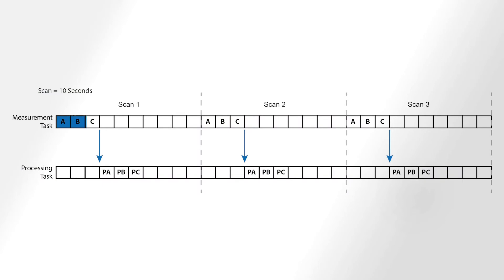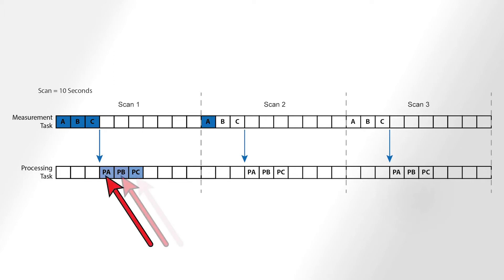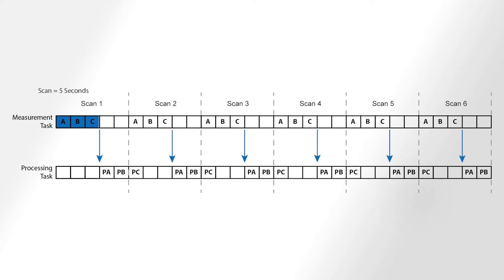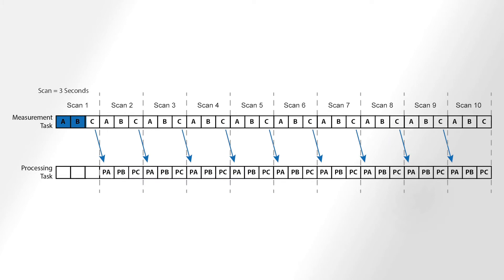Here is the same program we looked at in the sequential mode example, but this time it is running in pipeline mode. Once again, there are three measurements — A, B, and C — with the processing of the measurements, PA, PB, and PC. Because we are using pipeline mode, the measurement and processing tasks are handled separately but can occur concurrently. In the sequential mode example, the fastest we could run the program without getting skipped scans was six seconds. But in pipeline mode, measurements and processing happen concurrently, which allows us to increase the scan rate to five seconds. And by removing all idle time, it could run every three seconds.